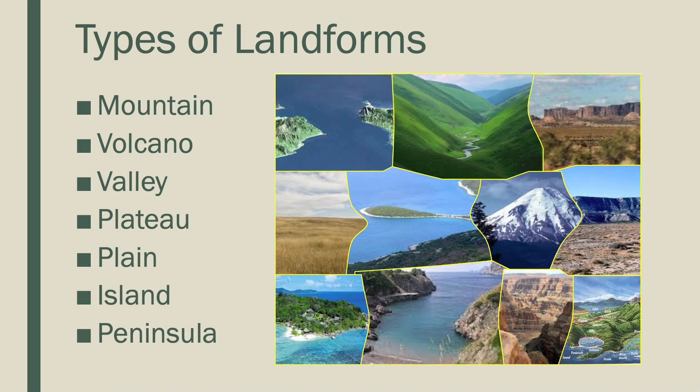To summarize, the types of landforms are: mountain, volcano, valley, plateau, plain, island, and peninsula. Thank you for listening. I hope you have enjoyed and learned something. Goodbye!